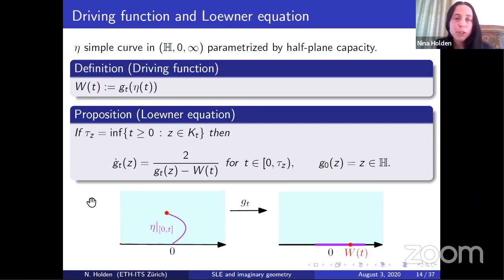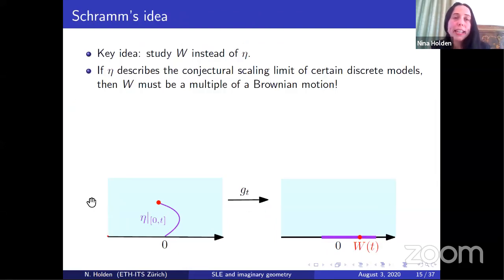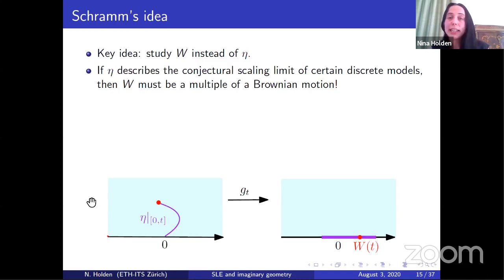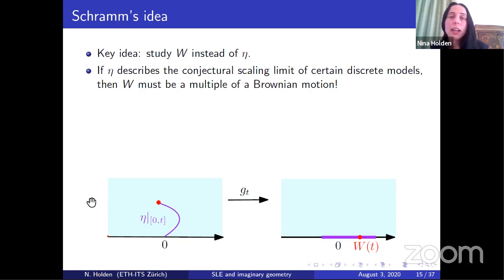Now I have introduced the driving function and the Loewner equation. We will go to Schramm's idea. When Schramm introduced SLE, he was interested in understanding the scaling limit of discrete models such as the loop-erased random walk, percolation, and the uniform spanning tree. He assumed that these models had scaling limits and looked at properties of the limiting curve. He realized that instead of studying the curve η, one can equivalently study the driving function W, because if we have a curve η we can get the family of functions g_t which gives us the driving function W. Conversely, if we have the driving function W we can reconstruct the curve η.